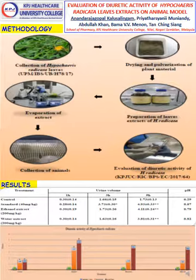The animal experimental study was approved by our institutional ethical committee. In the diuretic activity study, the two main parameters observed were urine volume and pH. For the experimental protocol, the animals were grouped into four groups, each group having six animals.